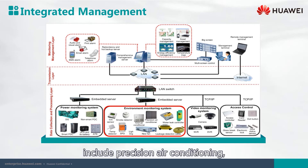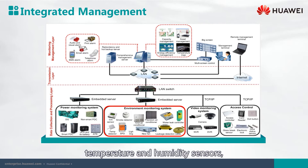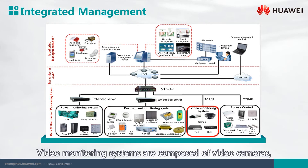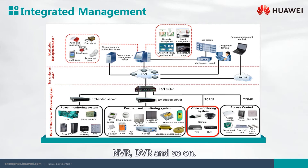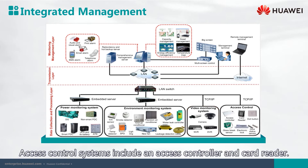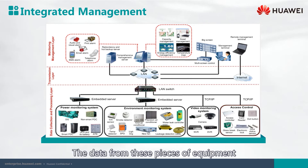Environmental monitoring systems include precision air conditioning, temperature and humidity sensors, smoke detectors, and water leak detectors. Video monitoring systems are composed of video cameras and NVR/DVR. Access control systems include an access controller and a card reader.